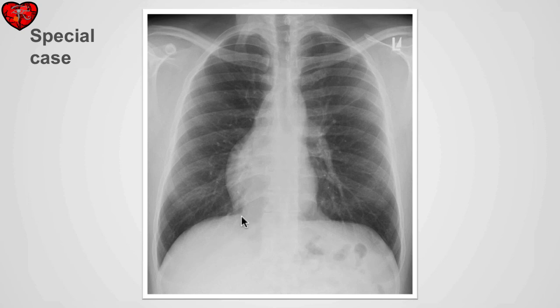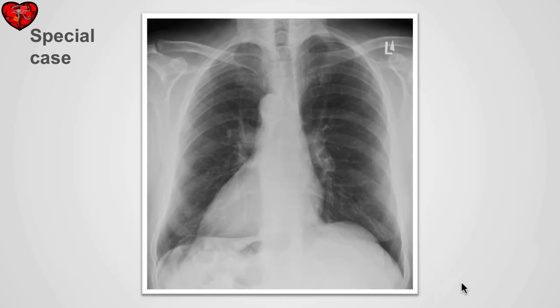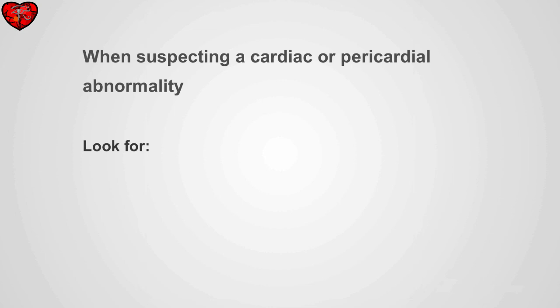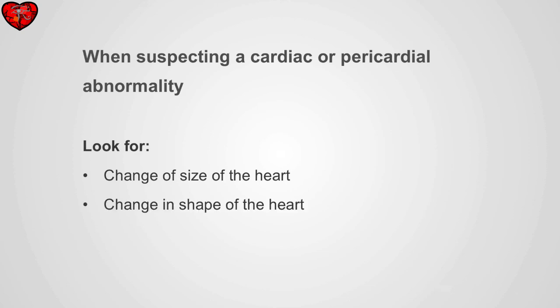In a normal position case, the right hemidiaphragm is higher than the left due to normal anatomical structures. In another case, we have dextrocardia with elevation of the left hemidiaphragm because the patient has complete situs inversus. In summary, when suspecting a cardiac or pericardial abnormality, look for a change in size of the heart, change in shape, abnormal contours, and abnormal calcification.